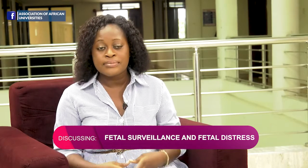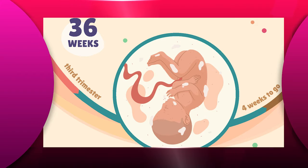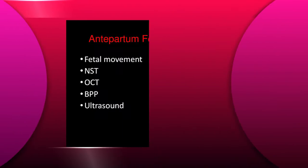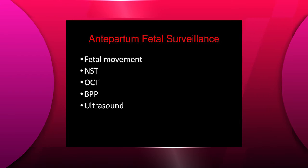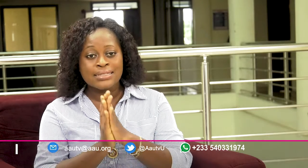So when should a pregnant woman start fetal surveillance? Women at high risk for stillbirth should undergo antepartum fetal surveillance using the non-stress test, the contraction stress test, and the biophysical profile or modified biophysical profile. Initiation of testing at 32 to 34 weeks of gestation is appropriate for most pregnancies that are at increased risk of stillbirth.